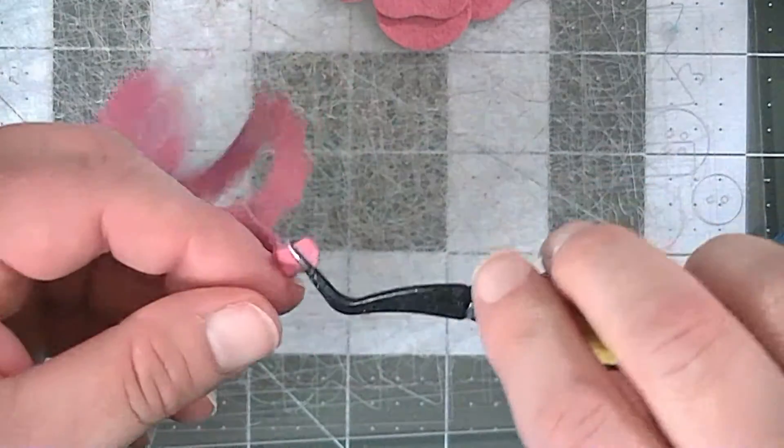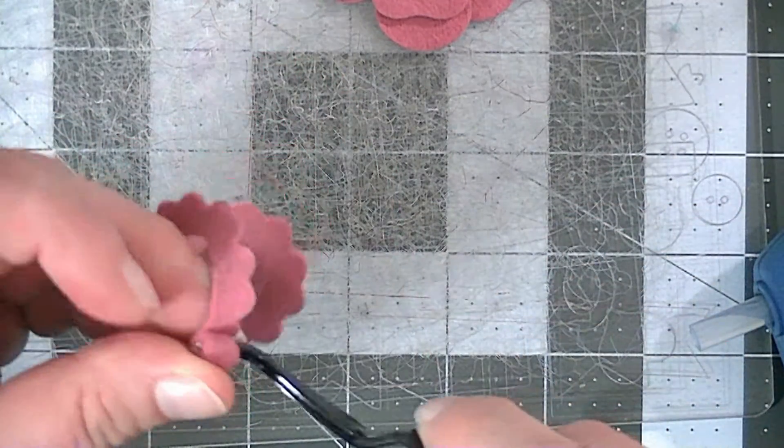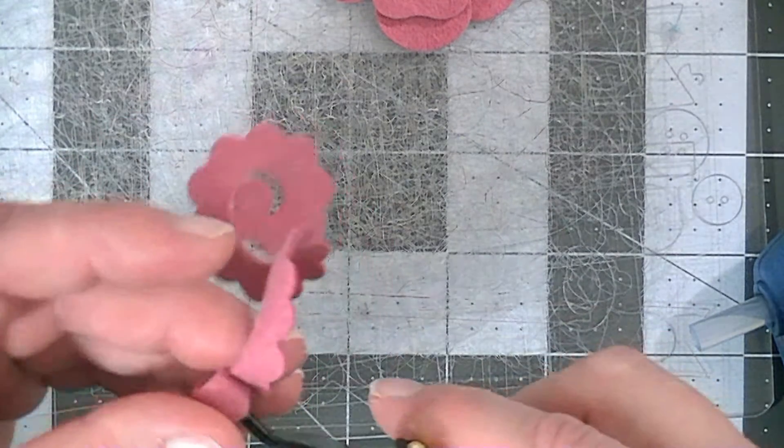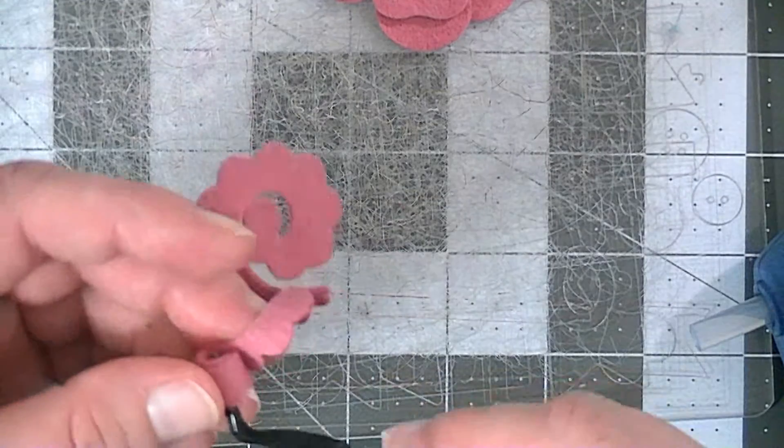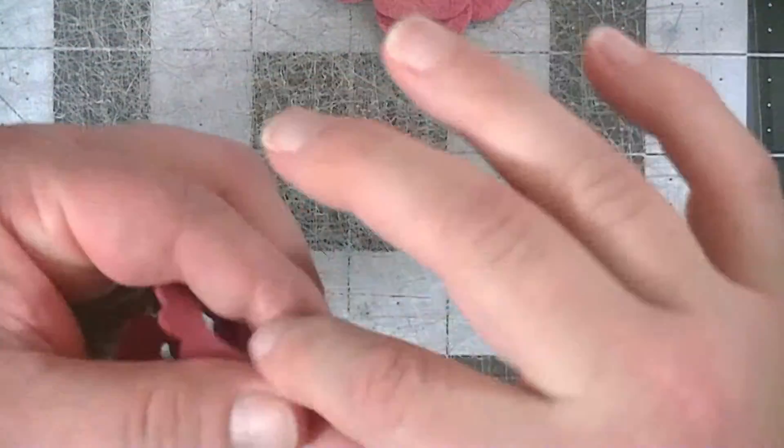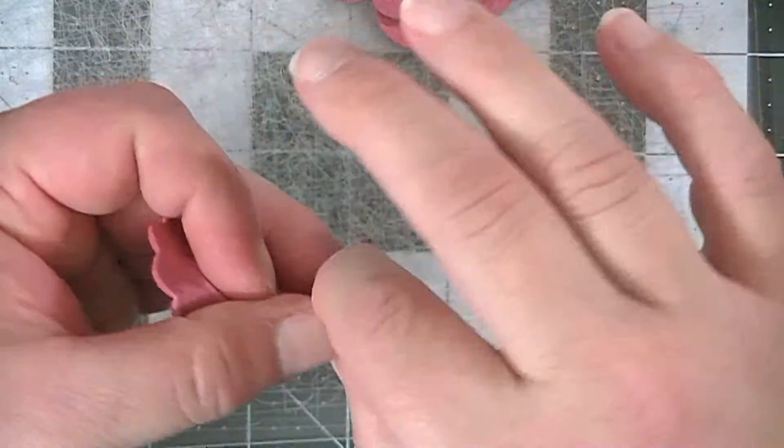It's really easy. If you want it to be a bigger flower, roll it loose. If you want it to be smaller, roll it tight. At some point, I just get rid of the tweezers and use my fingers because I'm just going around in a circle.